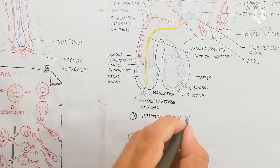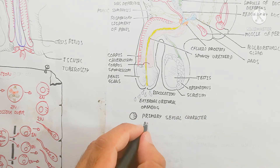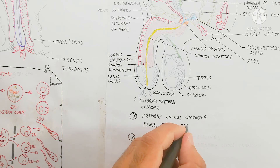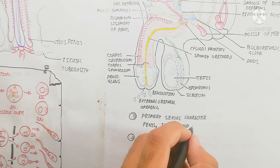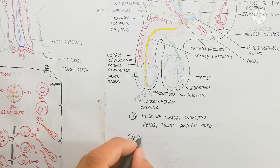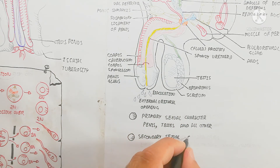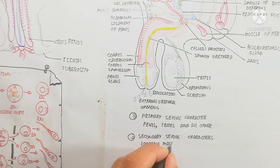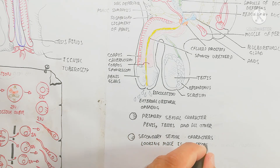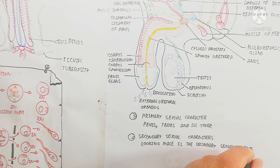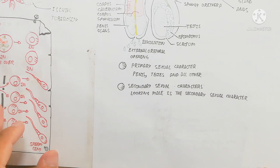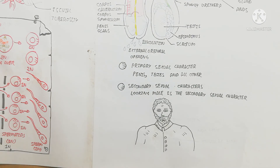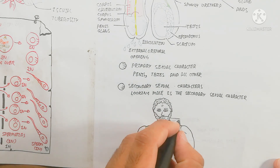The external urethral opening is present here, and this is the primary sexual character. The secondary sexual character is due to the interstitial cells producing testosterone, which gives the beard, deep voice, and muscular body. These secondary sexual characters are recognized without intercourse to identify maleness, which is produced by the primary sexual character. Therefore the testis is the primary sexual character — if that is functioning well, the secondary sexual character will also be good.